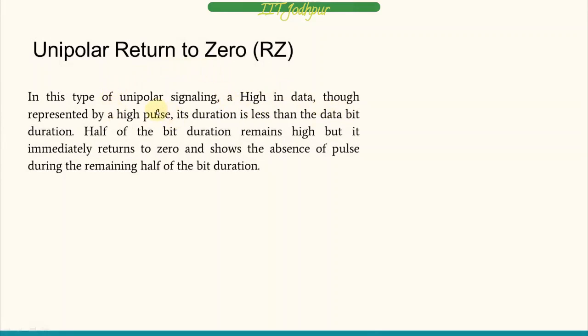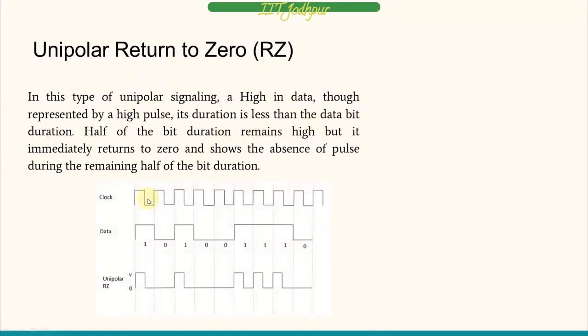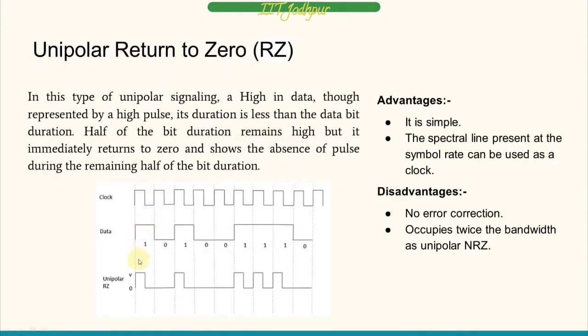Next is unipolar return to zero. A high data is represented by a high pulse whose duration is less than the bit duration — the signal reaches a high value, stays there for some time, then returns to zero before the next bit. For zero, it remains zero. It is fairly simple, and the spectral line present can be used as a clock. The main disadvantages are no error correction, and it requires twice the bandwidth of the non-return to zero line code.